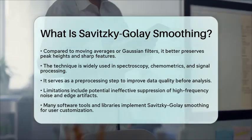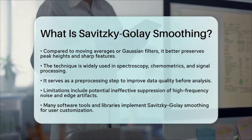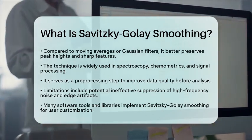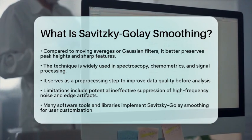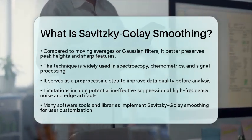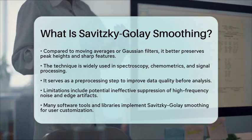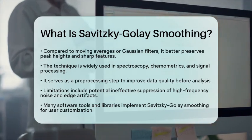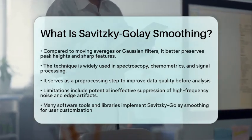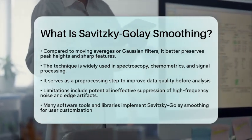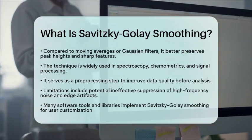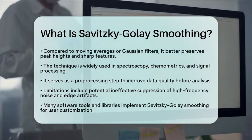In practical terms, Savitzky-Golay smoothing is a form of data cleaning and preprocessing that enhances the quality of measurement data. By reducing noise while retaining the essential shape and trends of the signal, it becomes a valuable tool for statistical analysis. Many software tools and programming libraries implement this technique, allowing users to adjust the window size and polynomial degree to fit their specific data needs.